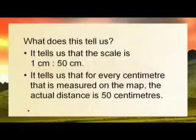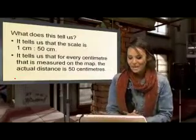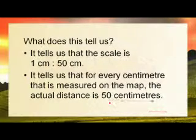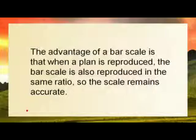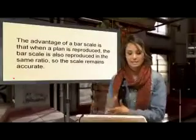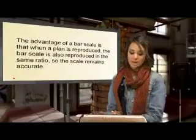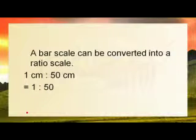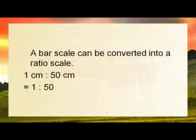Which is usually why we don't work with centimetres on the ground. It tells us that for every centimetre measured on the map, the actual distance is 50 centimetres in reality. The advantage of a bar scale is that when a plan is reproduced, the bar scale is also reproduced in the same ratio, so the scale remains accurate. But we can convert a bar scale into a ratio scale — one centimetre to one centimetre — and it looks like that.